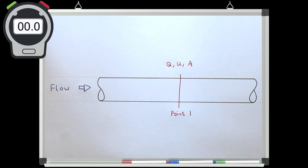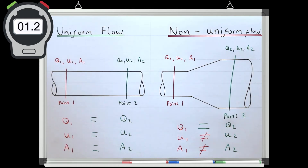The key distinction here is that for steady or unsteady flow, we are talking about how the flow parameters at a single point vary with time. Whereas for uniform or non-uniform flow, we are talking about how the parameters at a single instance in time are varying with distance. And if the flow is steady, the value of the main parameters at a single instance will be the value of the parameters at any time considered.